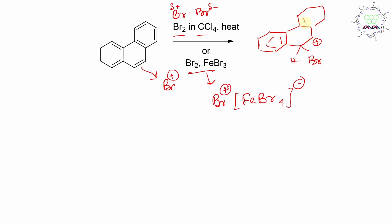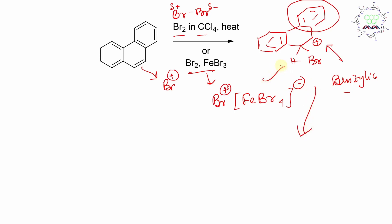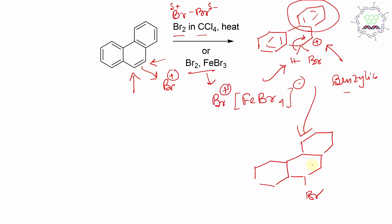The positive charge will appear here, and the rest of the structure remains as is. If you look at this positive charge, it is benzylic — meaning it is conjugated with the benzene ring — so it is stabilized. In the next step, this proton will be lost, and the result will ultimately be the bromination product here. These two positions are equivalent, so it doesn't matter which one reacts — the ultimate product is the same.